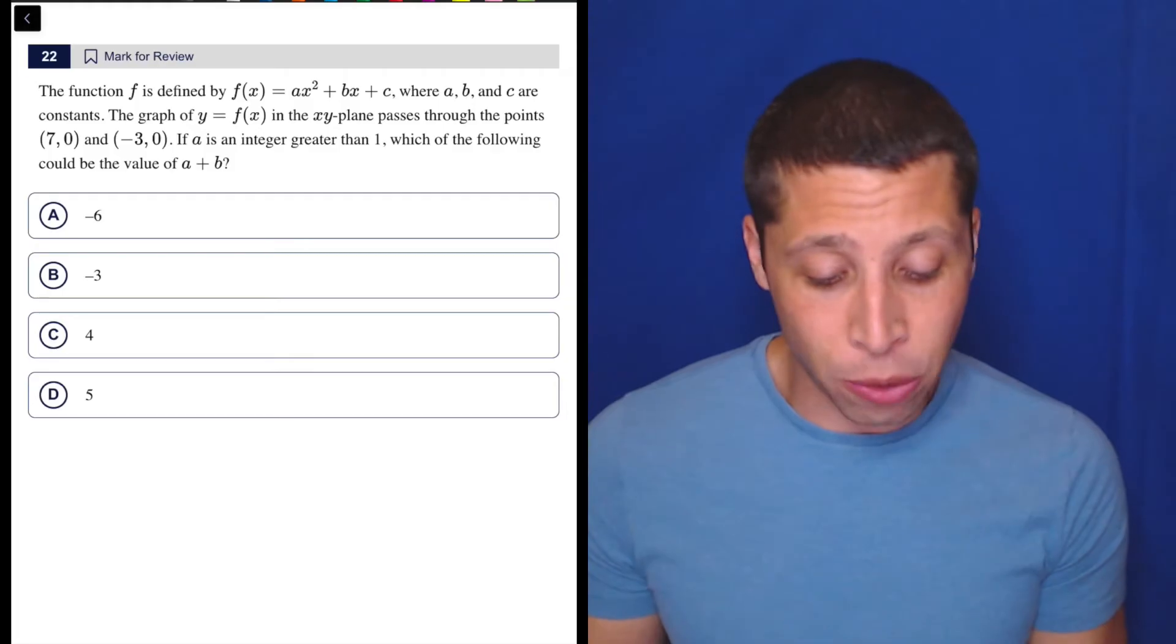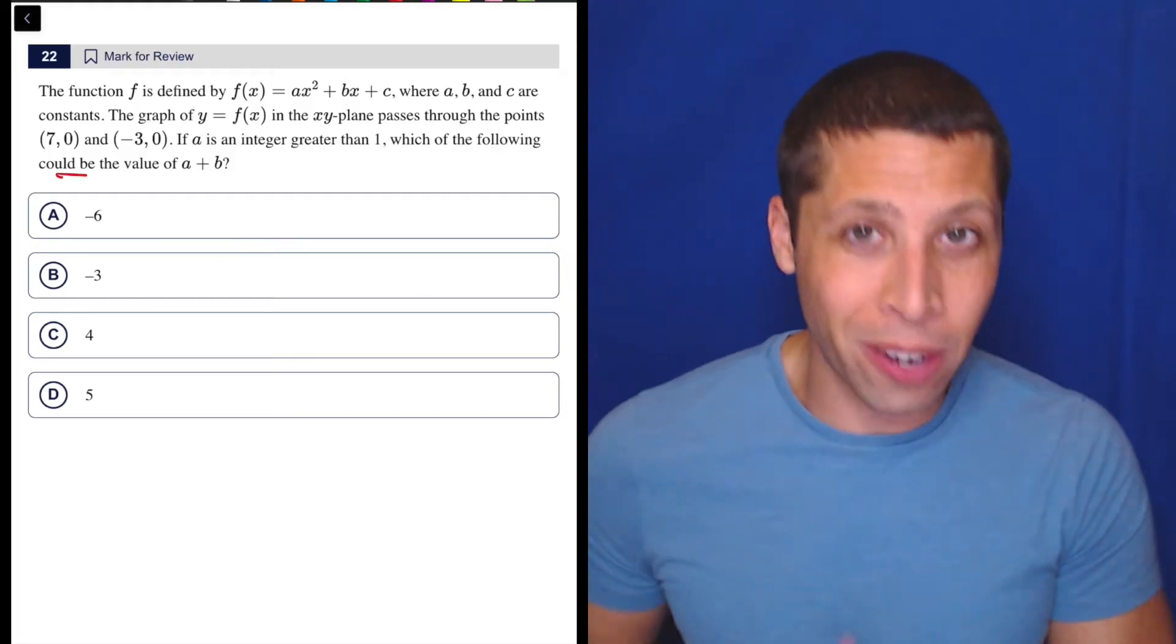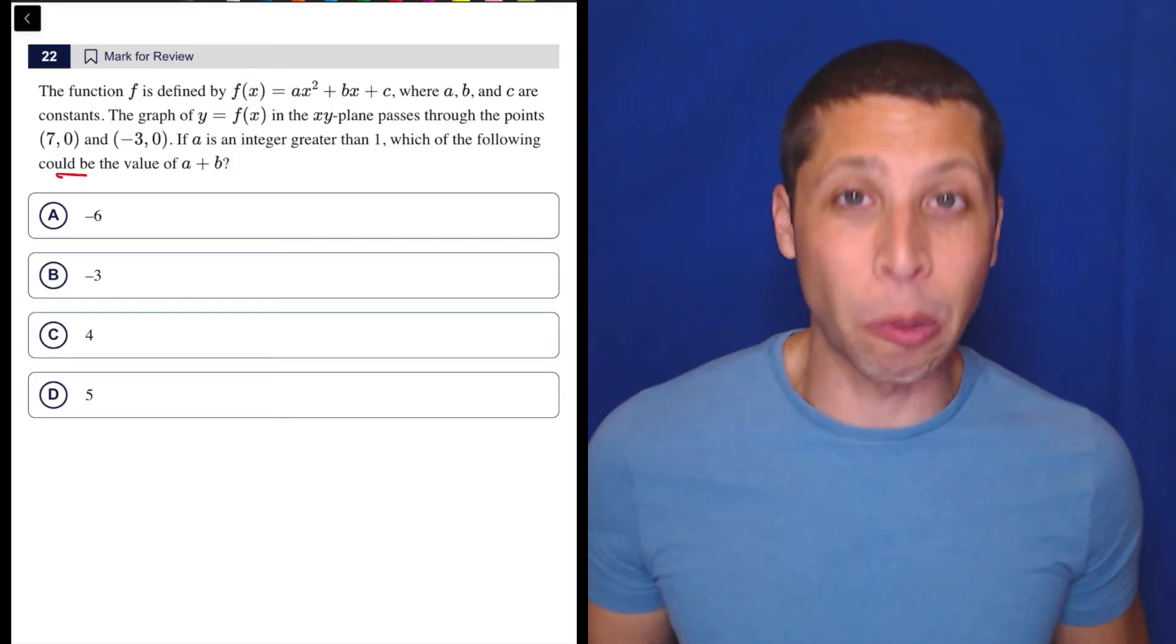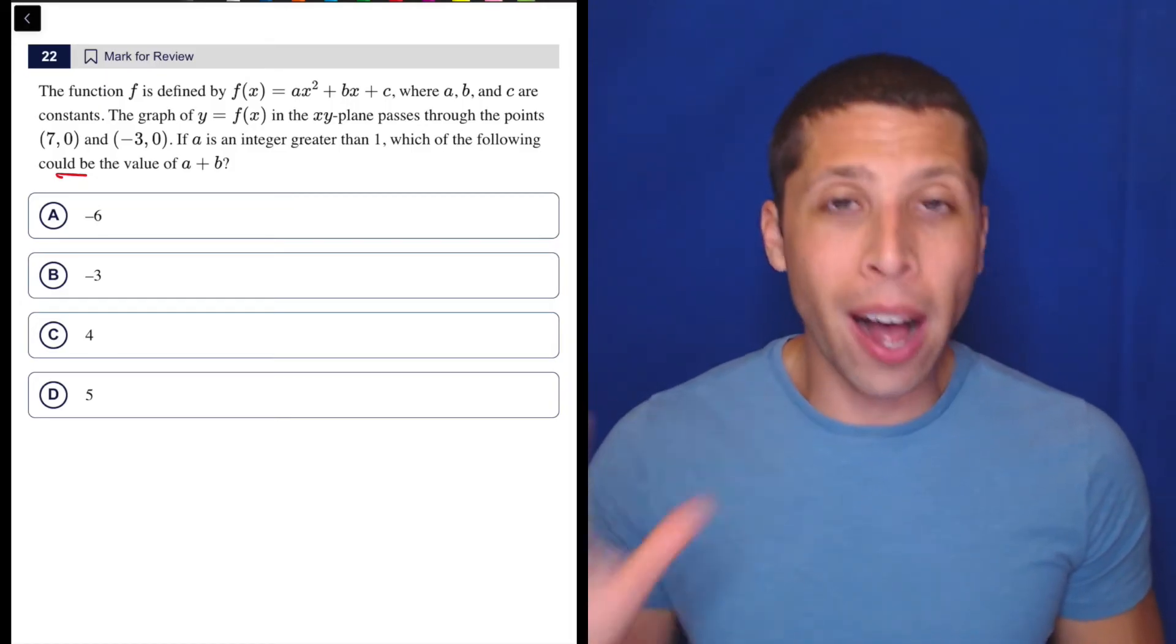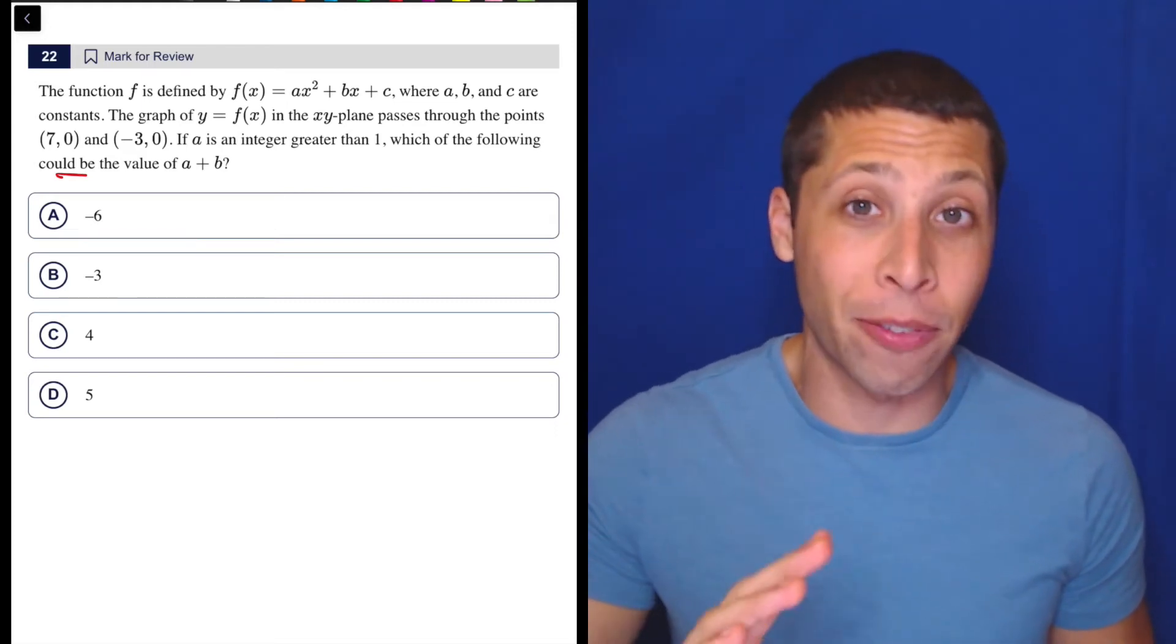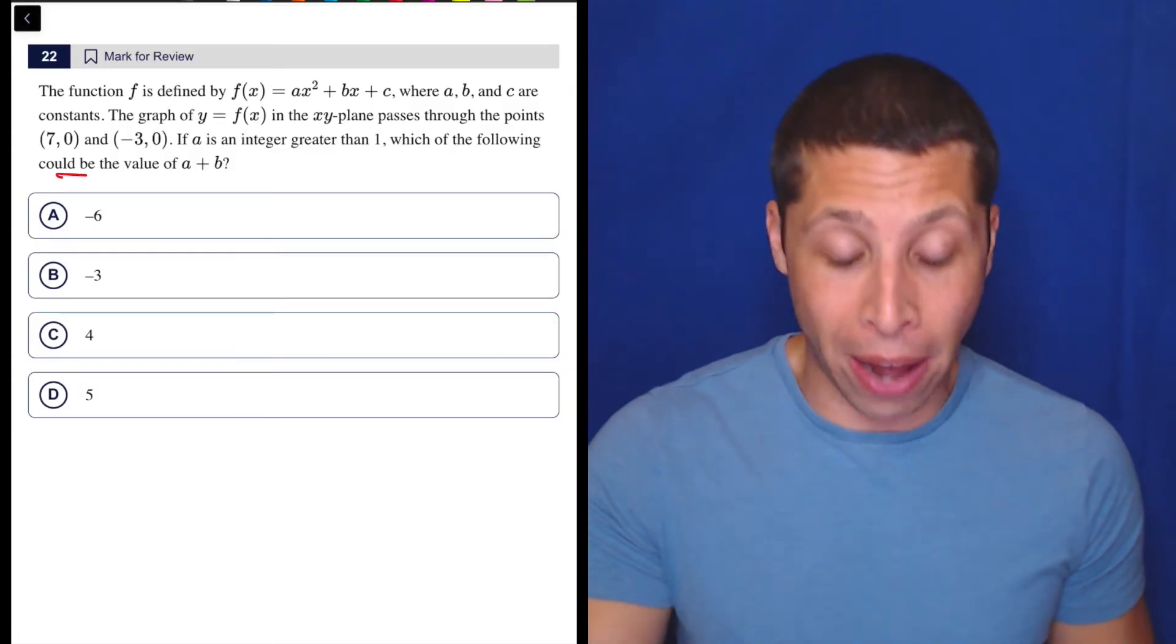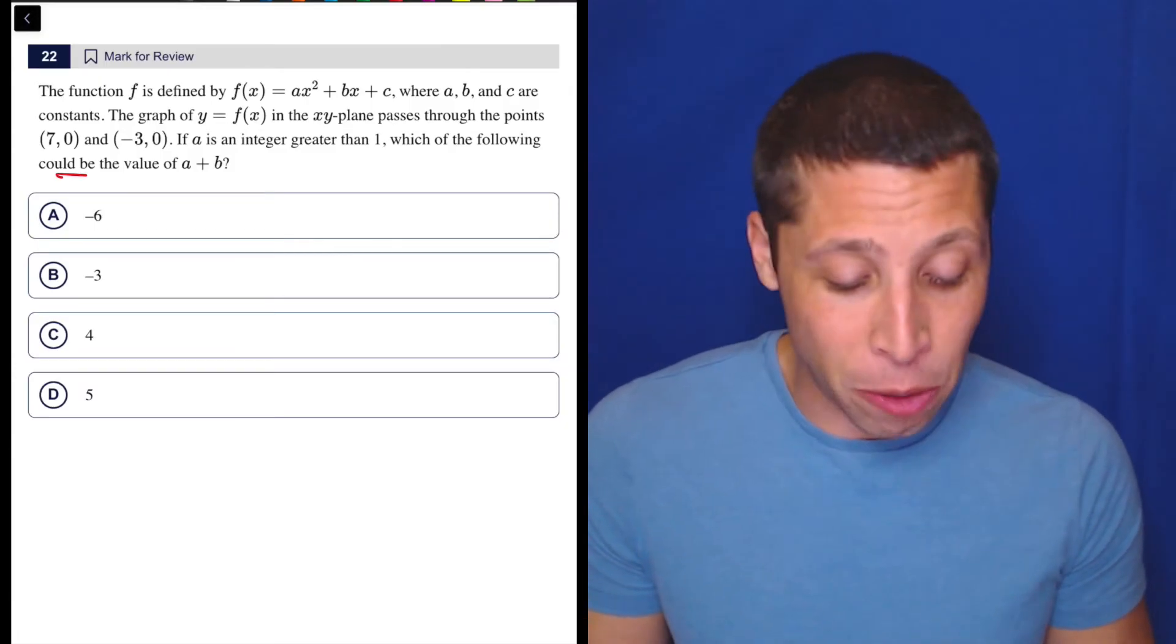And a lot of them end this way where it's like, what could be the value of A plus B? Meaning there's probably more than one value, but because it's multiple choice, they're kind of limiting us. So we have to kind of almost guess and check. So I will show you the way that I think the college board is going to instruct you to do it. And I think that's a very good way to go about it. But you know, I'm going to show you another way that might make you mad.